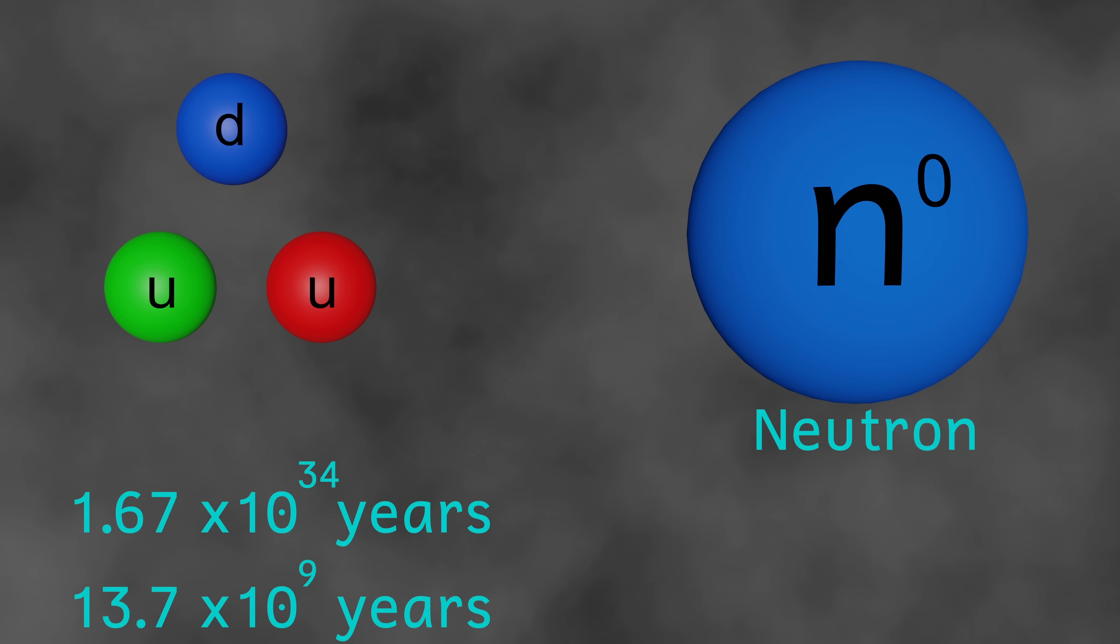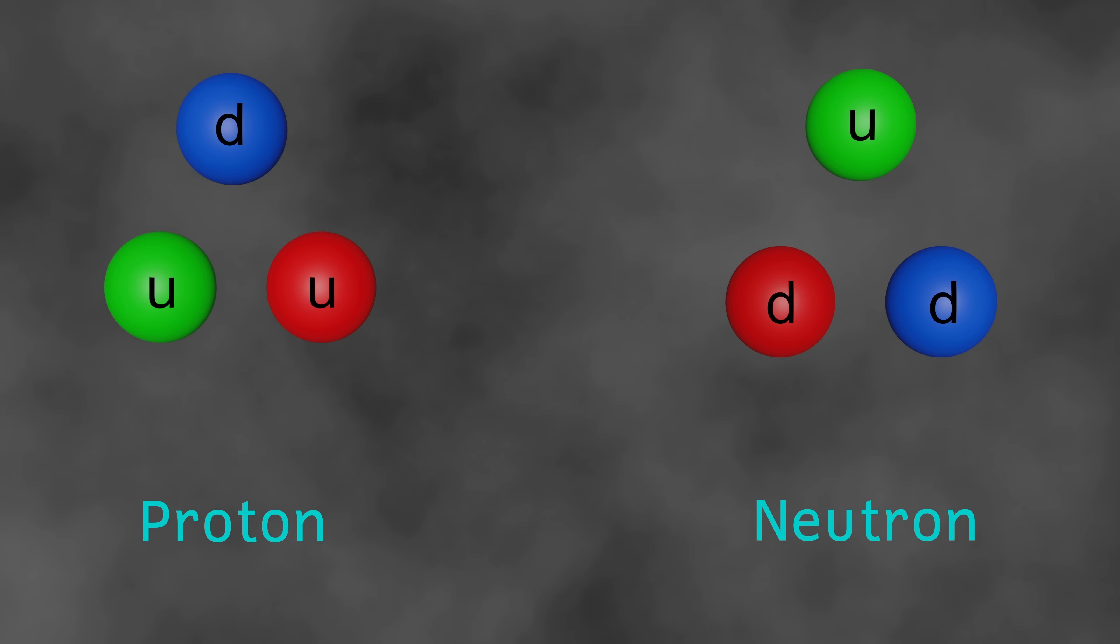Then we have neutrons. These are made from two down and one up quark. Now, free neutrons have a half-life of about 15 minutes. But they do then decay into protons. This is because everything in the universe wants to be at its lowest energy state. And because neutrons are a little more massive than protons, they have more energy. By a neutron turning into a proton, it will achieve a lower energy state. Neutrons bound up in atomic nuclei can be either stable or unstable, depending on the element.